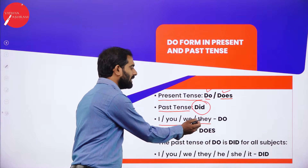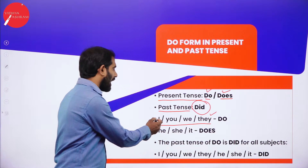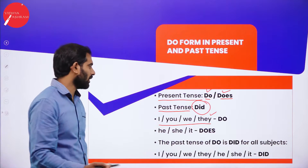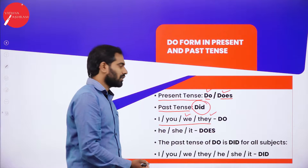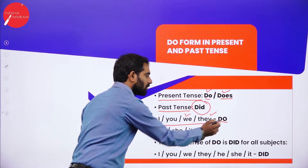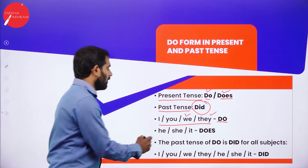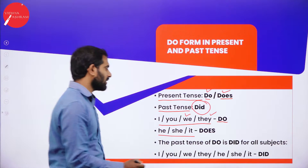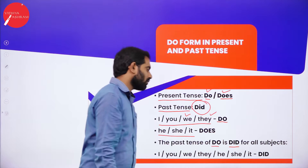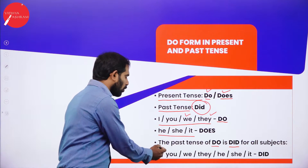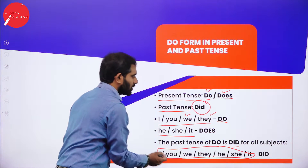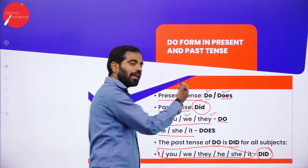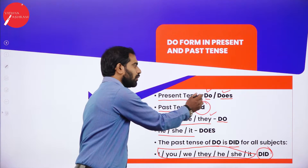We use DO with: I, you, we, they. I is first person singular; you is second person singular and plural; we and they are plural. Depending on the subject, we use DO. For third person singular — he, she, it — we use DOES. The past tense of DO is DID for all subjects. In past tense, no matter what the subject is, we always use DID. For present tense, depending on the tense and the subject, we use DO or DOES.